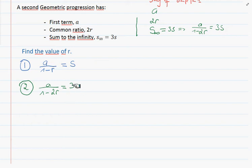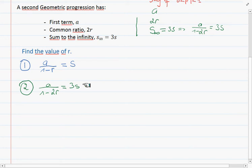Now that we have these two functions, we can isolate s here and compare it to the first one. We're going to divide by 3 on both sides. This is going to give us a divided by 3 minus 6r equals to s.